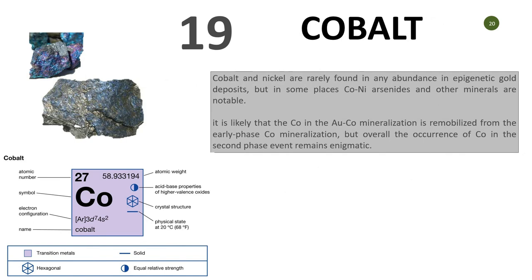Number nineteen is cobalt. Cobalt and nickel are brothers and sisters — closely related. Cobalt and nickel are rarely found in abundance in epigenetic gold, but in some places cobalt-nickel arsenide assemblages are notably present in gold deposits. It is one of the elements you need to look at.